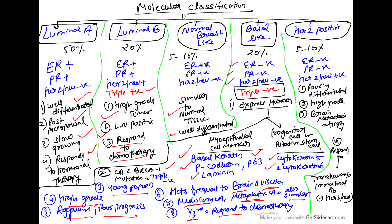HER2-neu positive is seen in 5 to 10% of cases. Only HER2-neu is positive; ER and PR are negative. It is a poorly differentiated, high-grade carcinoma with a very high frequency of brain metastasis. It responds to the monoclonal antibody trastuzumab, which inhibits HER2-neu. These are the five molecular classifications of NST carcinoma.